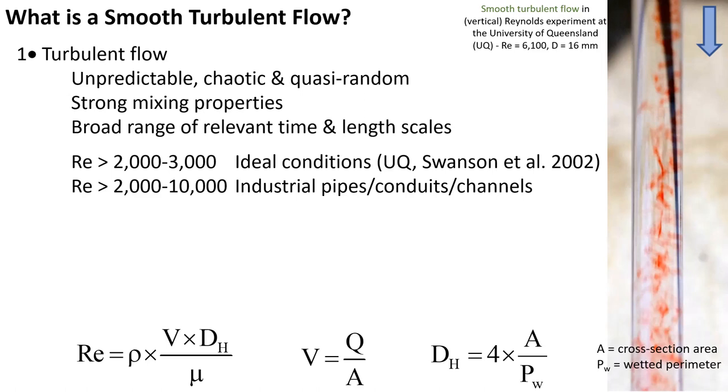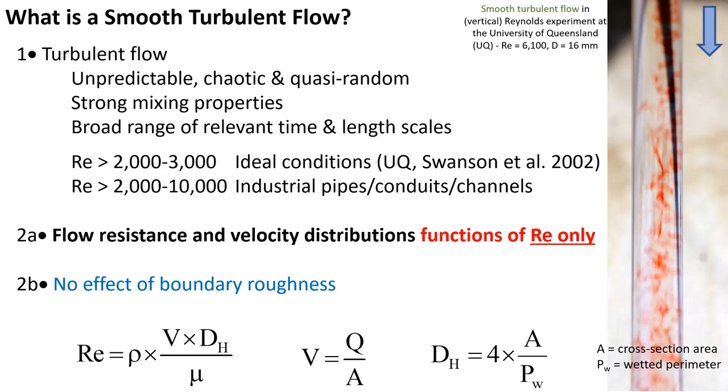The second key part for a smooth turbulent flow is that the flow resistance and the velocity dispersions are functions of the Reynolds number only, with no effect of the boundary roughness.